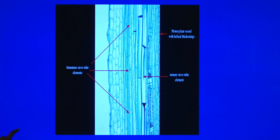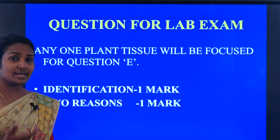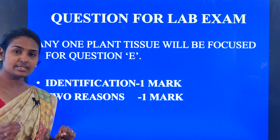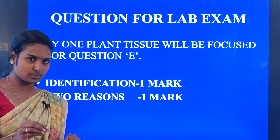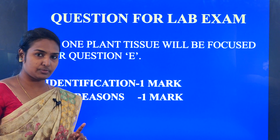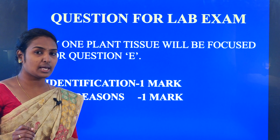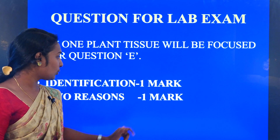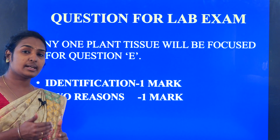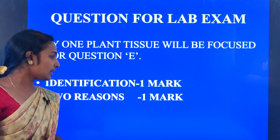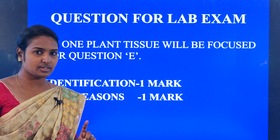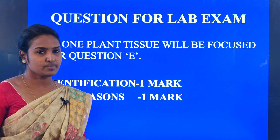This is about the plant tissues. What questions may you get in an exam? A permanent slide will be placed, and you have to identify which tissue has been placed — you can write: 'It is a TS of parenchyma' or 'It is a TS of collenchyma.' For that identification, you will be awarded one mark. Later you have to give two reasons or characters — you may write many, and the best two will be selected, for which you will be awarded one mark. So total for plant tissue, you will be awarded two marks: one for identification, and one for the two reasons given. Thank you.